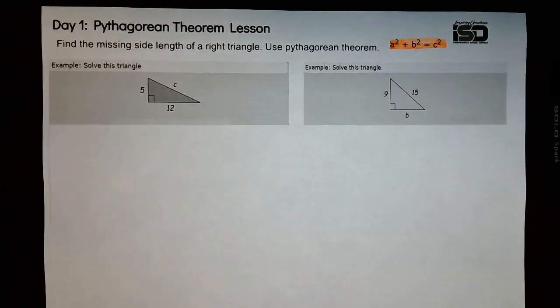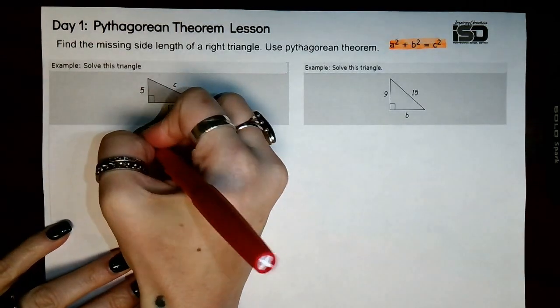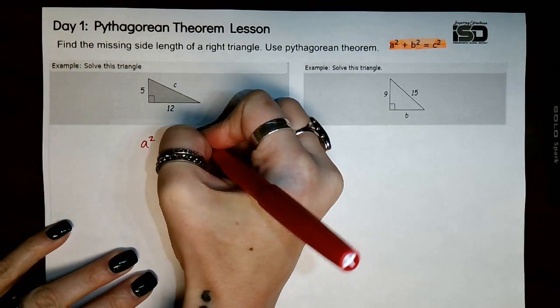Our first step, and this follows along with the page that has the actual example on it, we're just going through and explaining it. First step, we are going to start by writing out the formula: a squared plus b squared equals c squared.